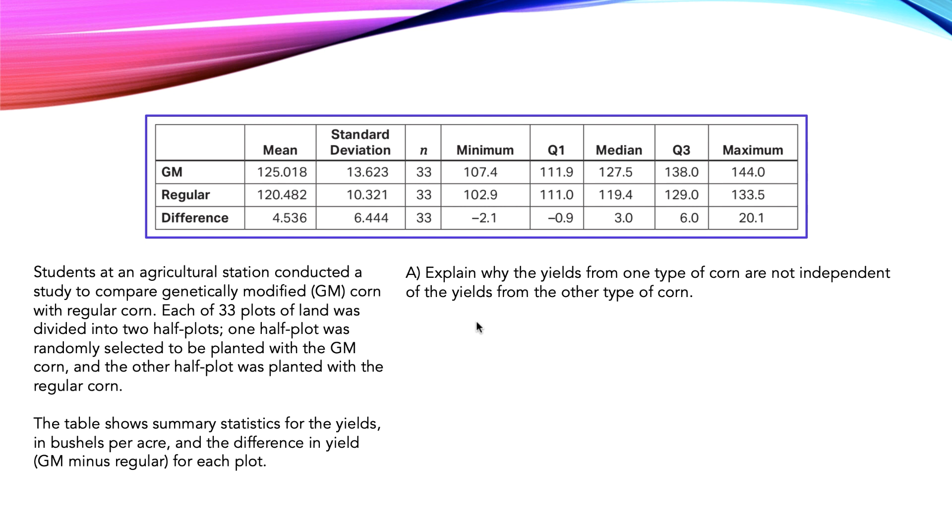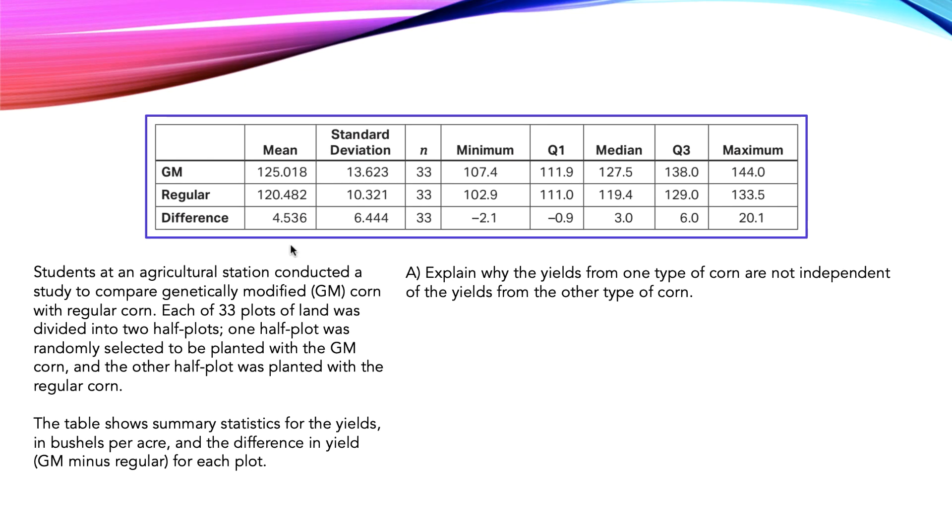Part A: Explain why the yields from one type of corn are not independent of the yields from the other type of corn. If you look at the setup of the study, we're testing two of the same types of corn except one is genetically modified and one isn't. And if you look at the results, we're taking the data from the GM, taking the data from the regular corn, subtracting the two and finding the difference.